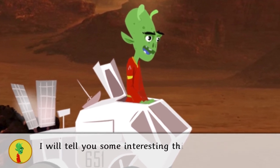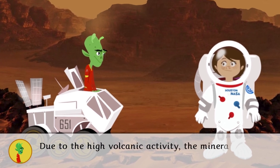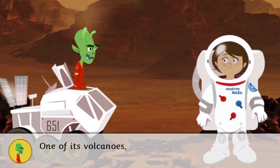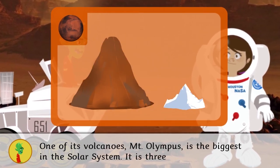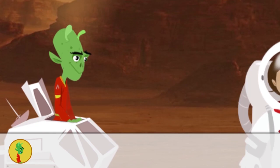Due to the high volcanic activity, the mineral Tridamite is formed. One of its volcanoes, Mount Olympus, is the biggest in the solar system. It is three times taller than Mount Everest.